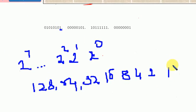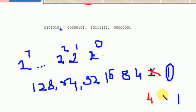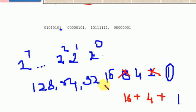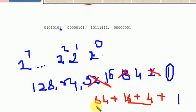For example, if the bit at position 2^0 is 1, the value is 1. If the next bit is 0, that value is 0. Next 1 at position 2^2 gives 4, so 4 plus 1. Next 1 at position 2^6 gives 64. So 64 plus 16 plus 4 plus 1 equals 85.